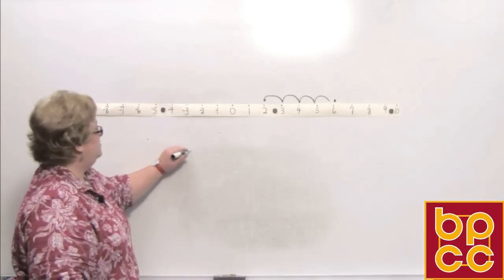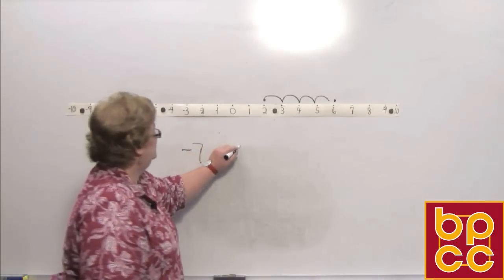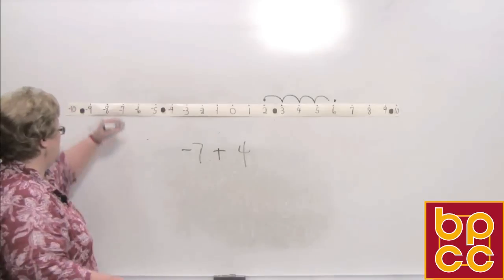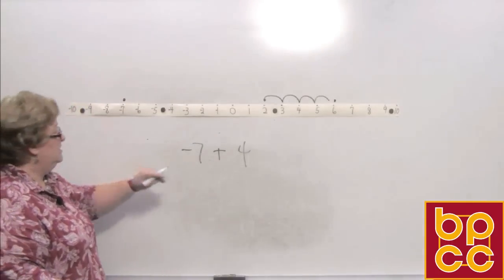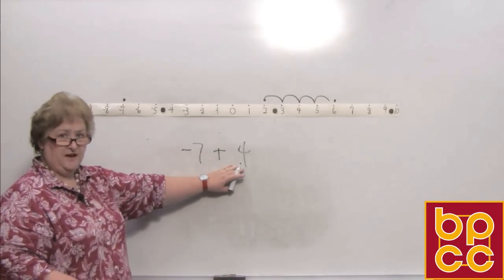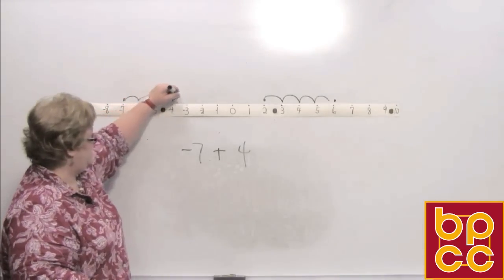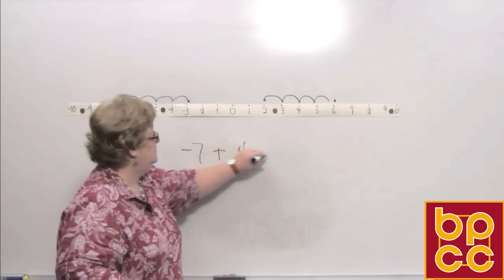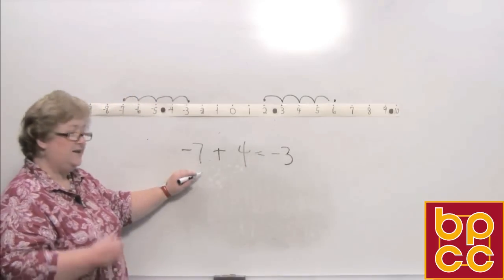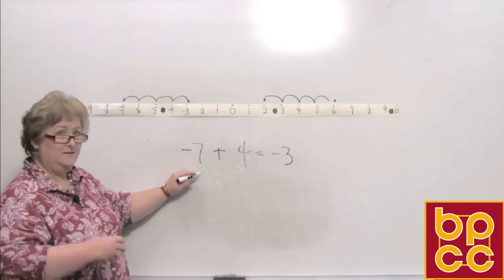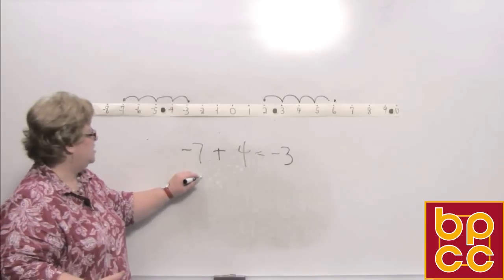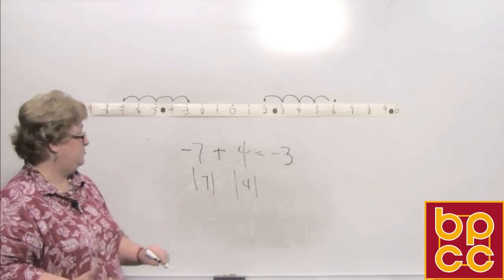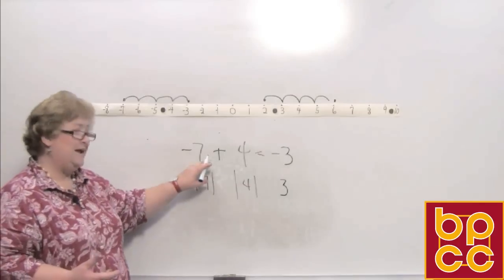Let's do negative 7 plus 4. That says go to negative 7 to begin with, and from negative 7, add 4 in the positive direction — moving 1, 2, 3, 4. Though we had more negative than positive, I end up with negative 3. If you don't have the number line, even though we're adding, secretly in our brain we're taking the difference. Compare 7 to 4 — the difference is 3. We know it's negative 3 because we had more negative to begin with.